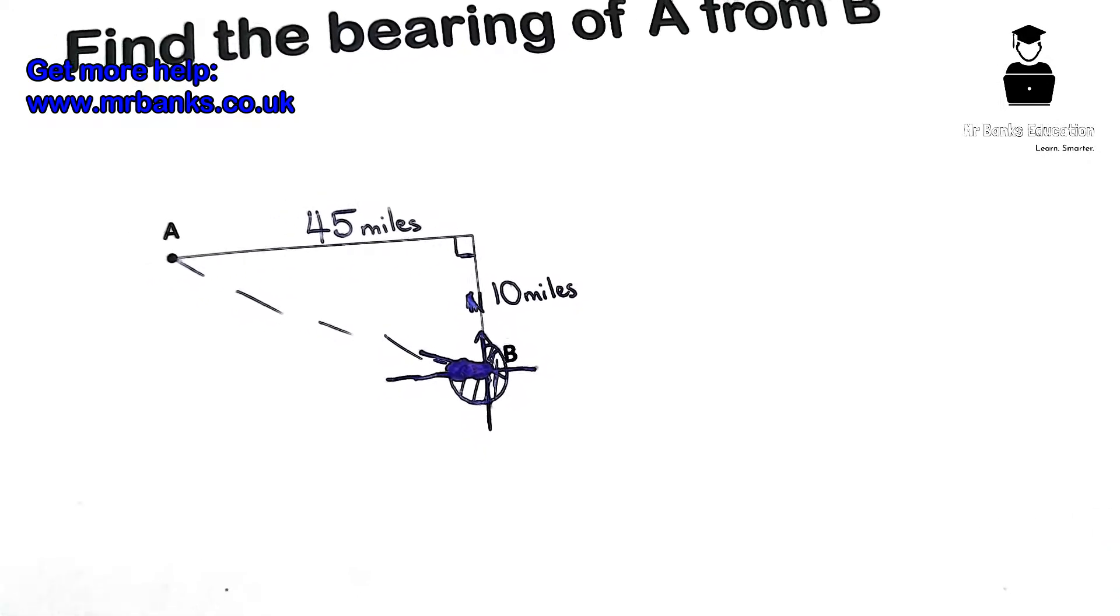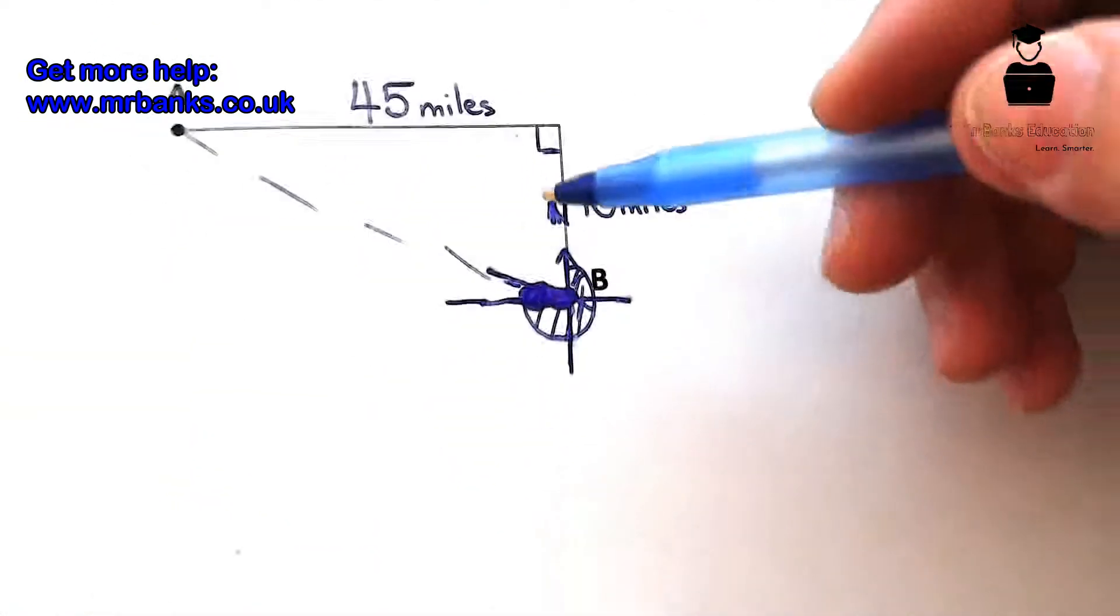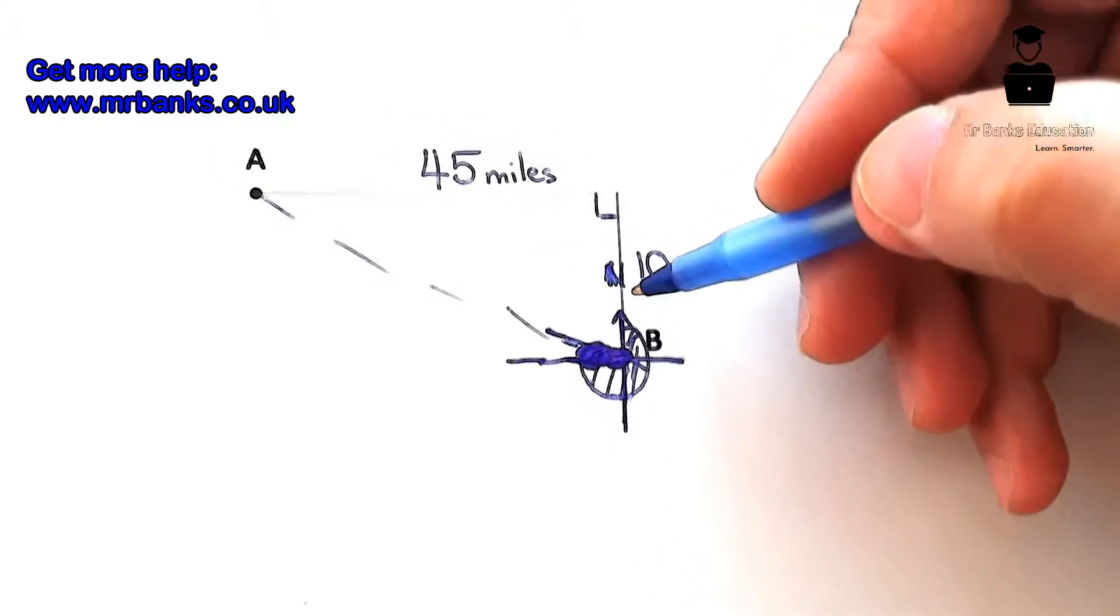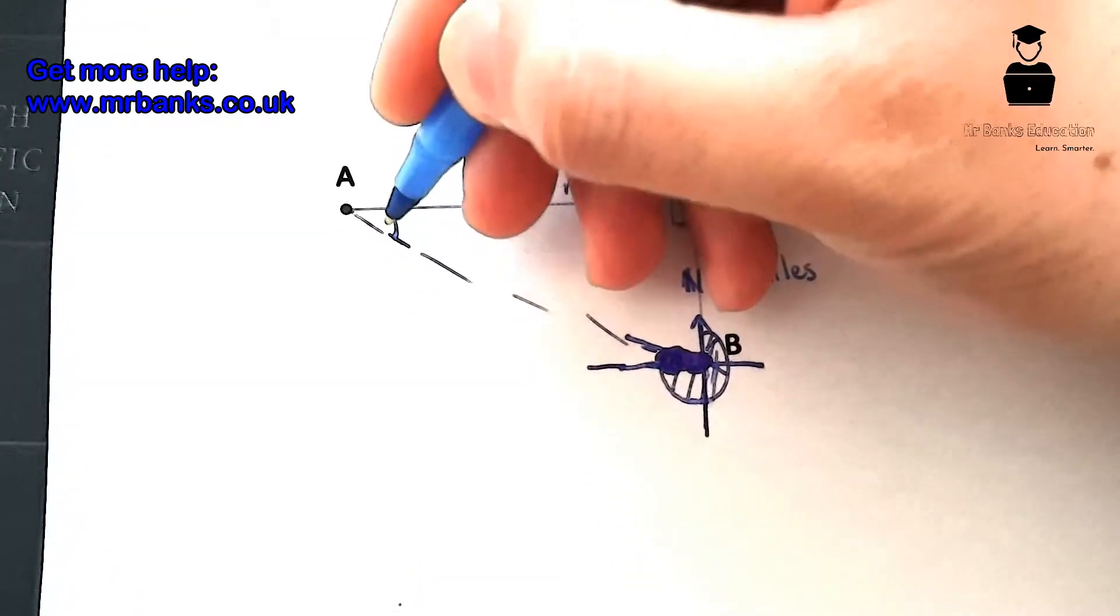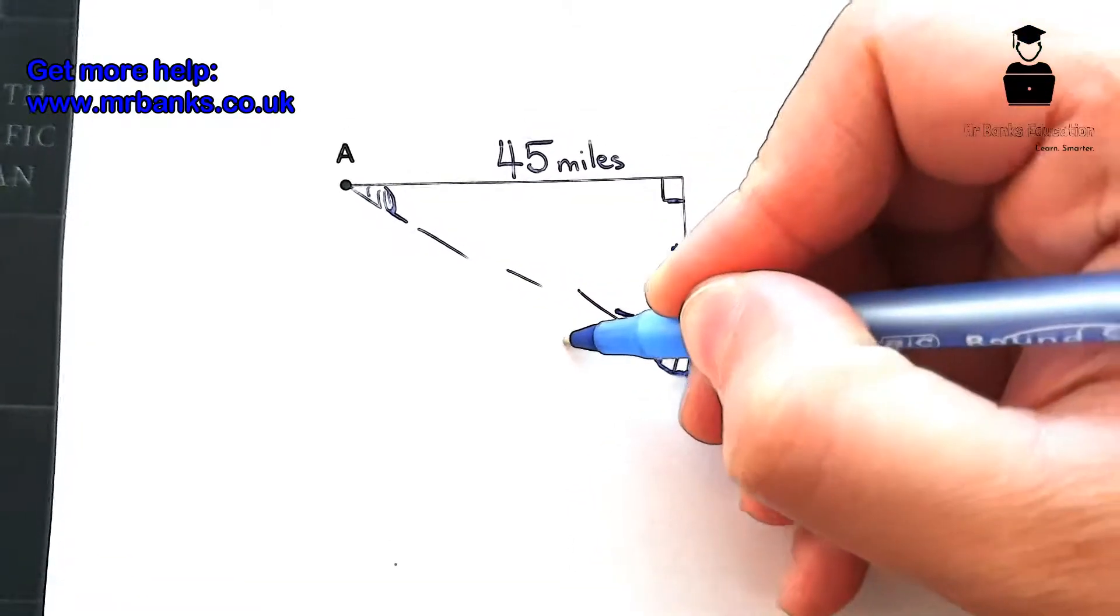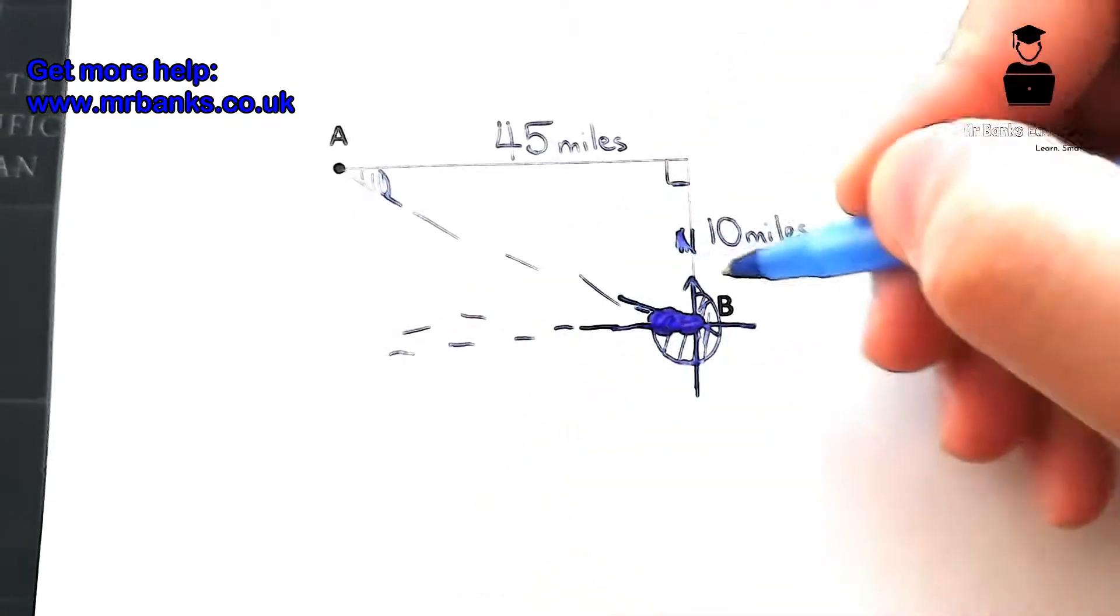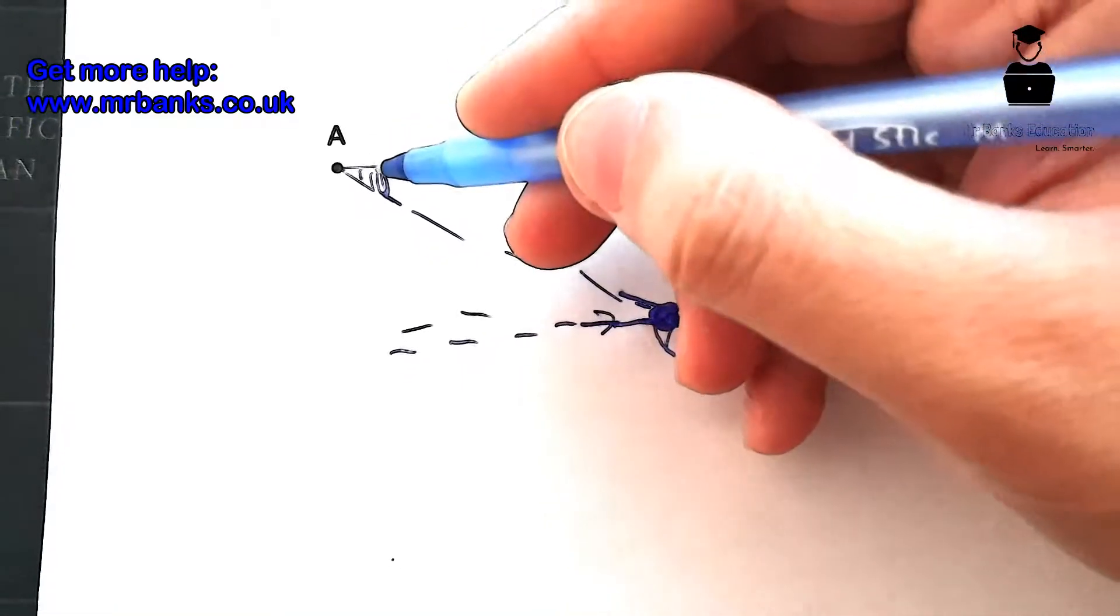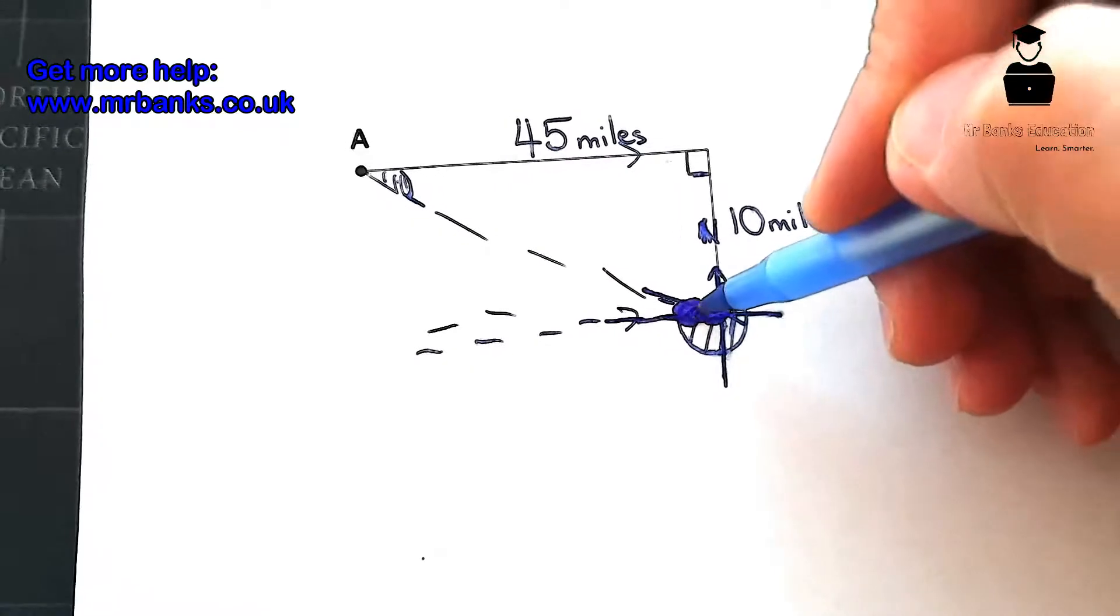So in order for us to find that angle, we can work out what this angle is up here, and then if you remember your rules of angles, there's an alternate angle going on here. There's parallel lines, this and this, and that is the alternate angle of that, which means they'll be the same.